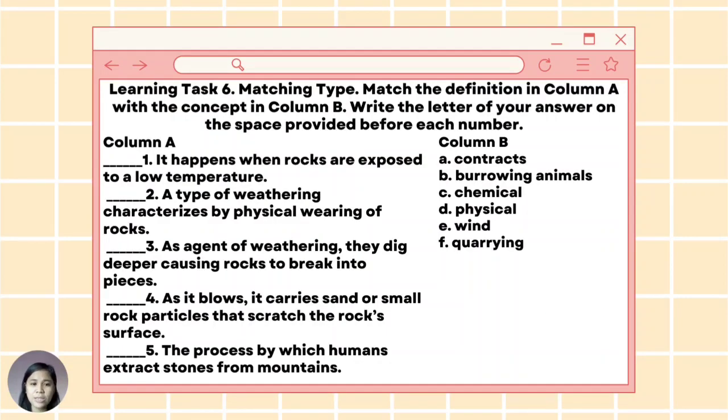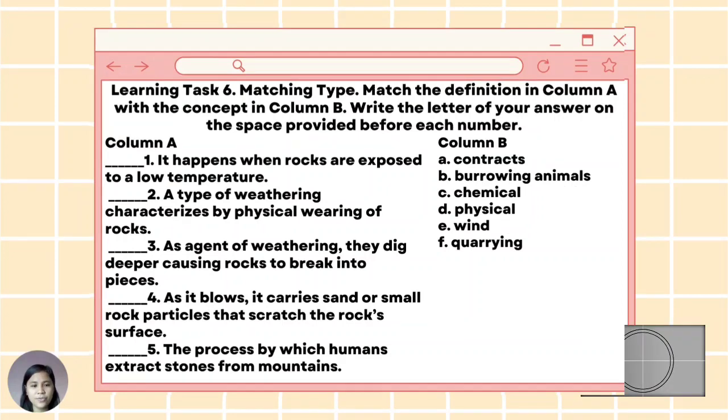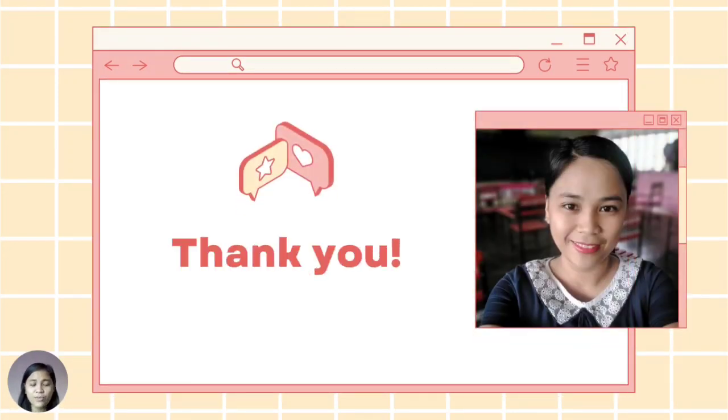For our last learning task, number six: Matching type. Match the definition in column A with the concept in column B. Write the letter of your answer on the space provided before each number. Number one: It happens when rocks are exposed to a low temperature. Number two: A type of weathering characterized by physical wearing of rocks. Number three: As an agent of weathering, they dig deeper, causing rocks to break into pieces. Number four: As it blows, it carries sand or small rock particles to scratch the rock's surface. And number five: The process by which humans extract stones from mountains. And for column B: letter A contracts, letter B burrowing animals, letter C chemicals, letter D physical, letter E wind, or letter F mining. And these are the correct answers: 1A, 2D, 3B, 4E, and 5F.